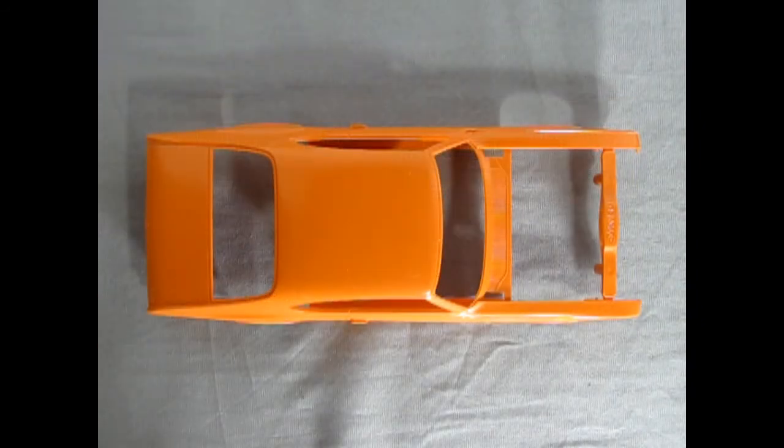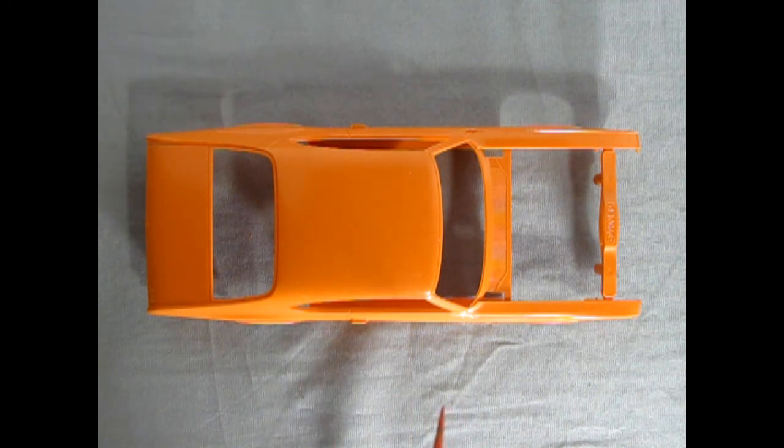That is your Johan 1970 Oldsmobile instruction sheet. The first component we want to look at is our body of course. You can see that the proportions look quite right even though this thing is molded in orange.